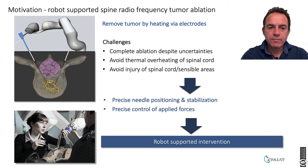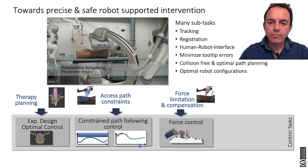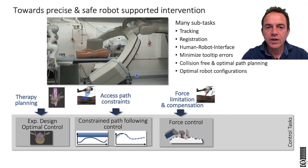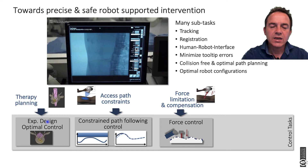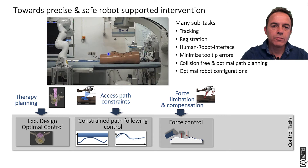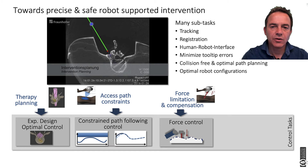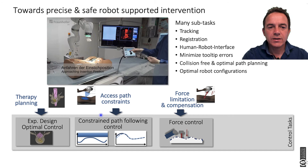Here you see the configuration: you have a robot that will support the doctor — robot-supported intervention. There are many things to look at. First, taking an image. Then planning the operation — therapy planning: how and where to insert the needle. Then the robot comes in and the question is: how do we control this robot? That's exactly what we looked at: therapy planning and guiding the doctor along the path, with the robot also limiting forces.